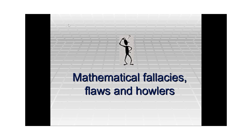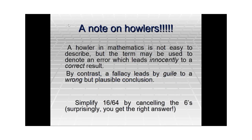Hello everyone. The title of today's video is mathematical fallacies, flaws and howlers. A howler in mathematics is not really easy to describe, but it's a term used to denote an error which leads to the correct result innocently — through some weird mathematical steps you land into the correct result. For example, if you look at 16 by 64, you cancel the 6 above and below and surprisingly get the correct answer, which is 1 by 4. But cancelling 6 above and below is mathematically stupid. These kinds of processes one follows to land into the correct answer are known as a howler in mathematics.